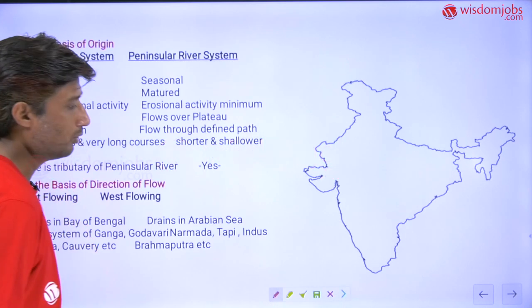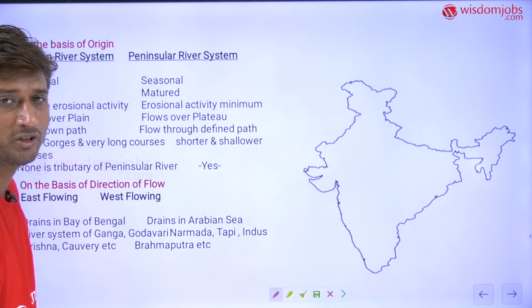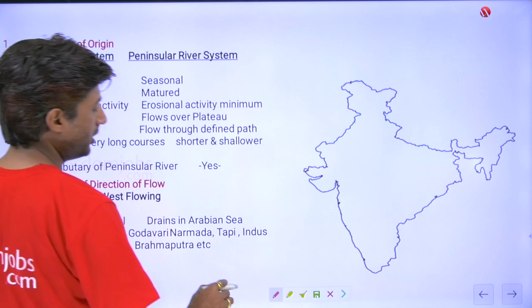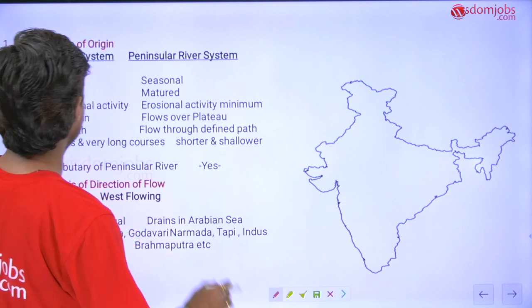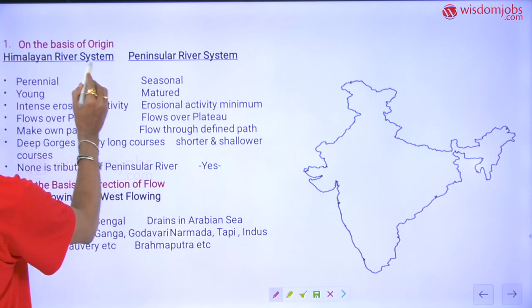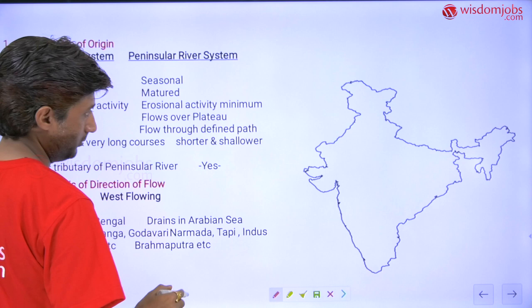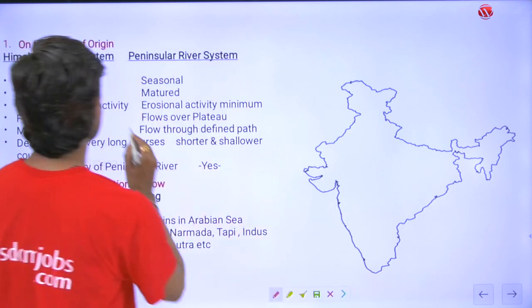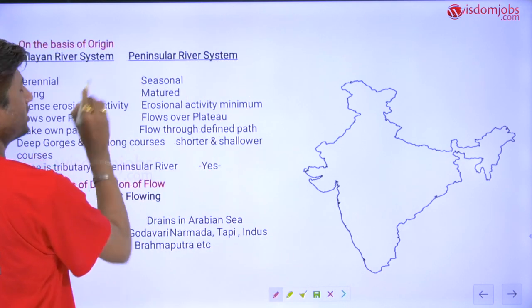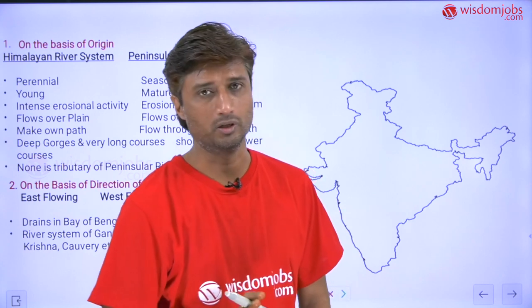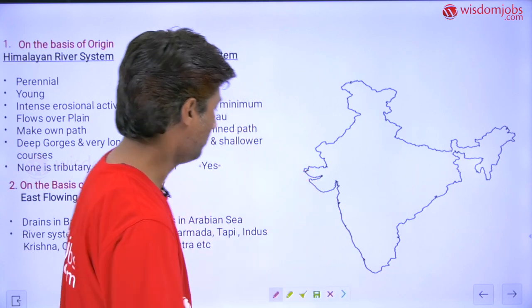Today we are going to start the next lecture about the drainage system of India. The drainage system of India is classified on two bases: firstly, the Himalayan river system, and secondly, the peninsular river system. When we use the term 'river system,' it includes the major river and its various tributaries.